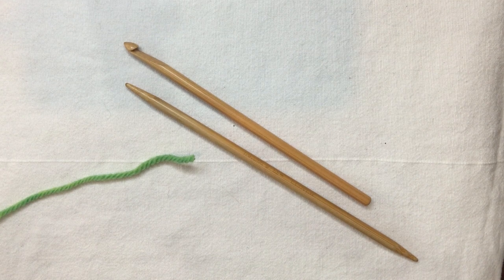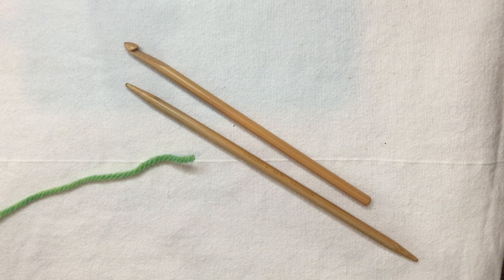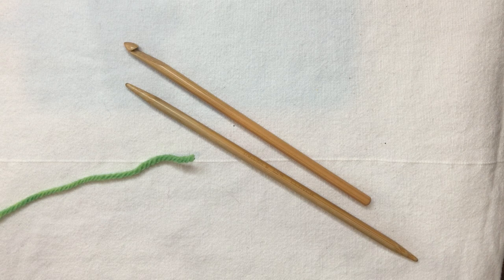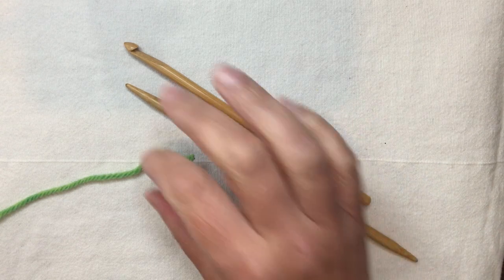This is a demonstration of a chain cast on, which is a nice pair for a chain bind off, and it uses one knitting needle and one crochet hook.